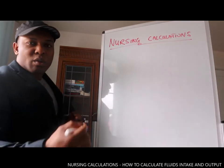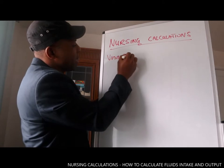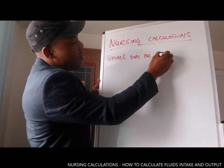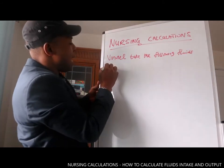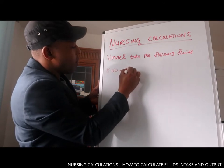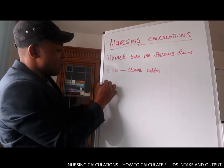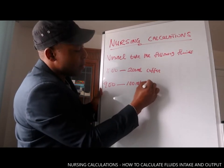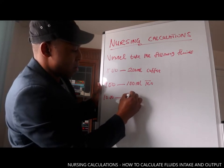So what we're going to do is calculate a fluid balance chart and determine the output to see whether it is a positive or negative balance. You might be asked to calculate a fluid balance chart for a patient called Vena over 24 hours. They will give you information such as: at 8 o'clock, 200ml coffee; 9 o'clock, 100ml coffee; 9 o'clock, 100ml tea; 10 o'clock, 200ml.